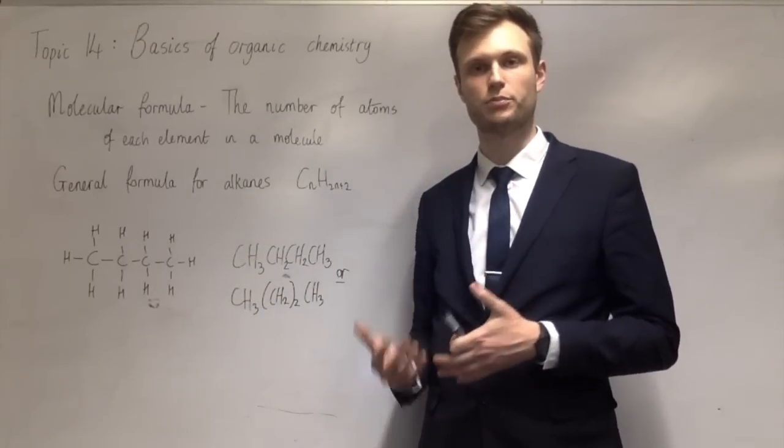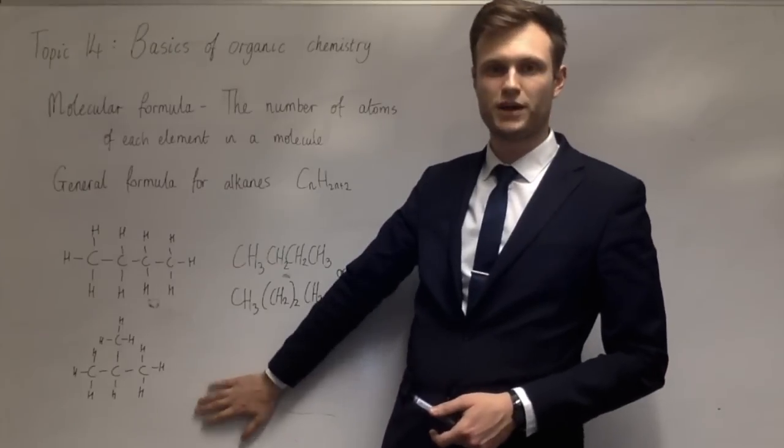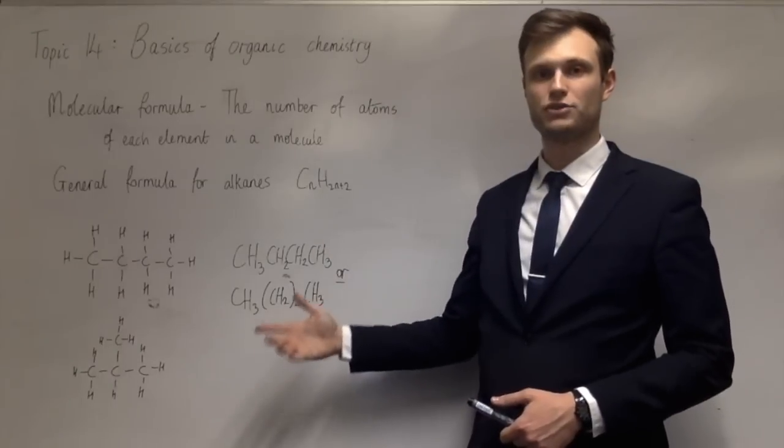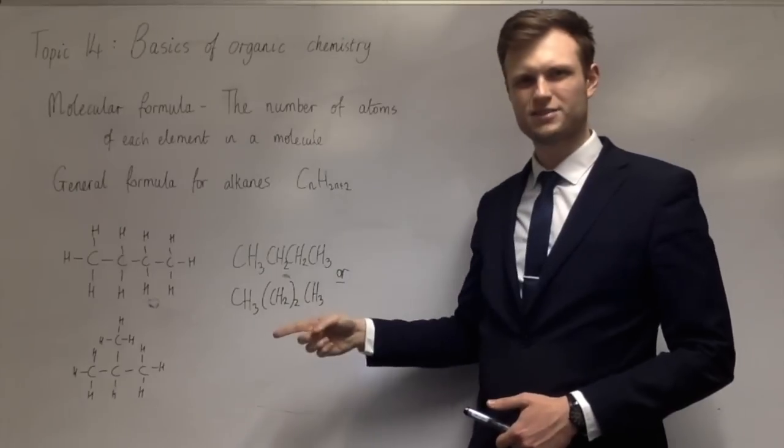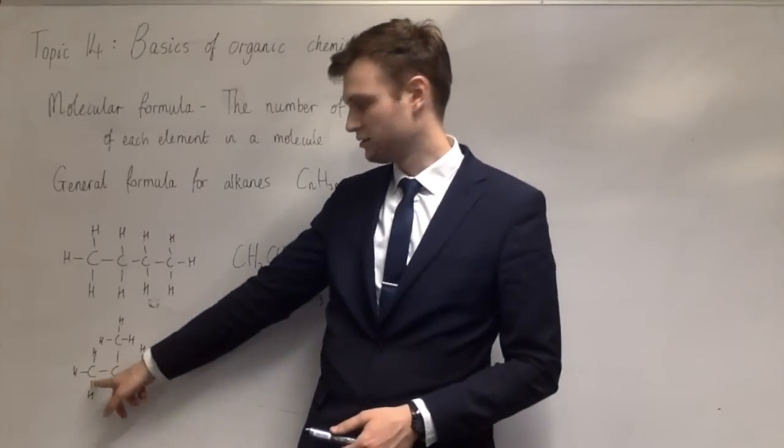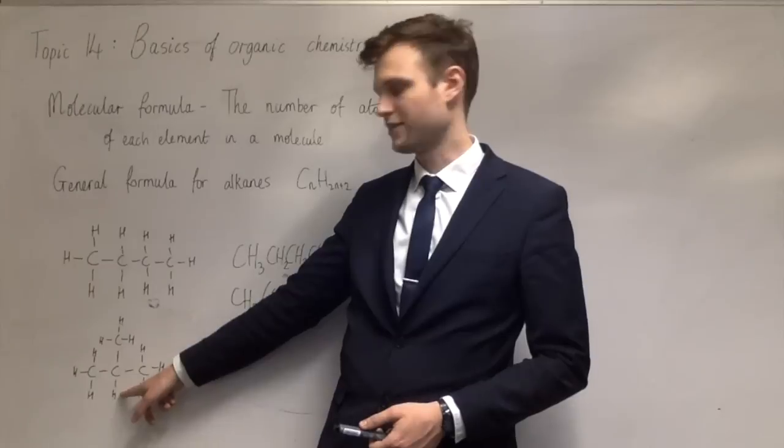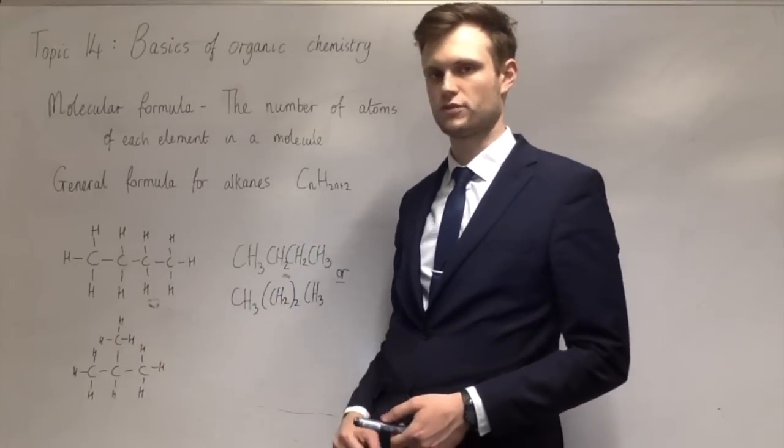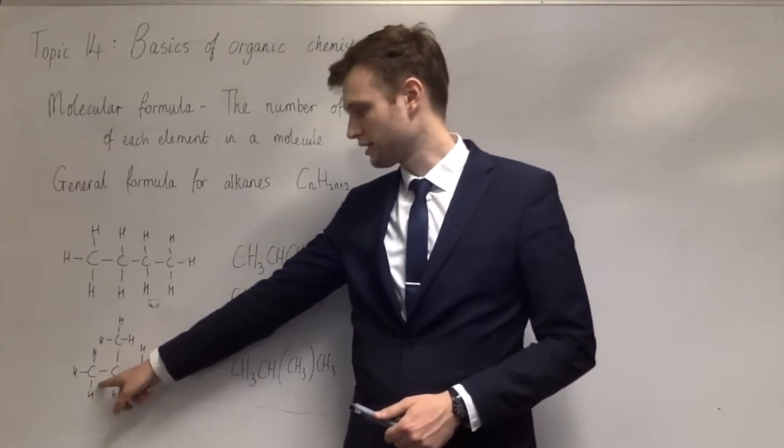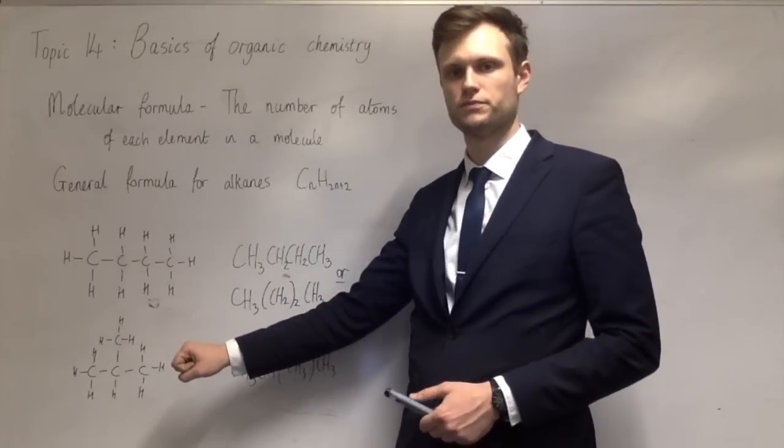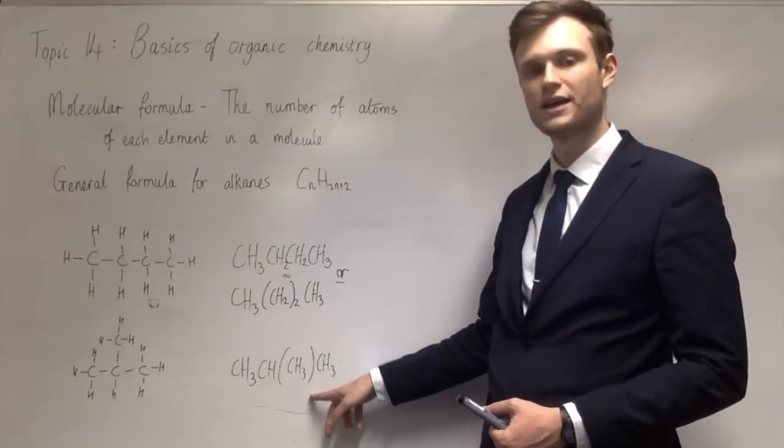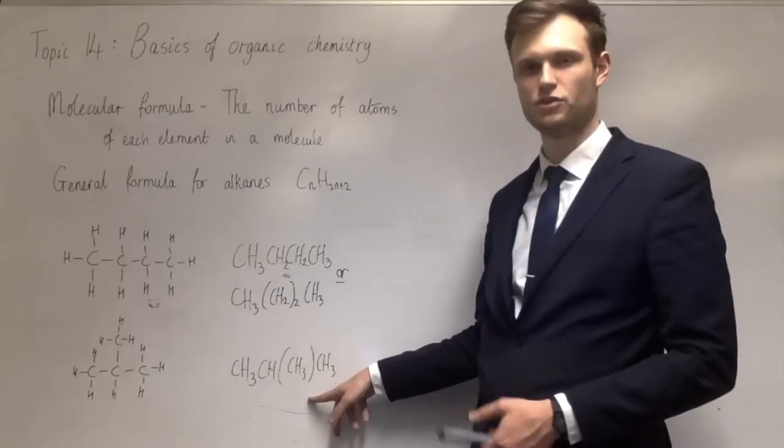Now if you're going to do the structural formula for methylpropane, it would look different. This is methylpropane. There's still four carbon atoms and ten hydrogen atoms. So it's still C4H10 for its molecular formula, but the atoms don't have the same structure as they do in butane. The structural formula for this would be CH3, CH, and then in brackets CH3, CH3. You read it across, left to right, CH3, CH, but then it's got a branch. And branches go in brackets.